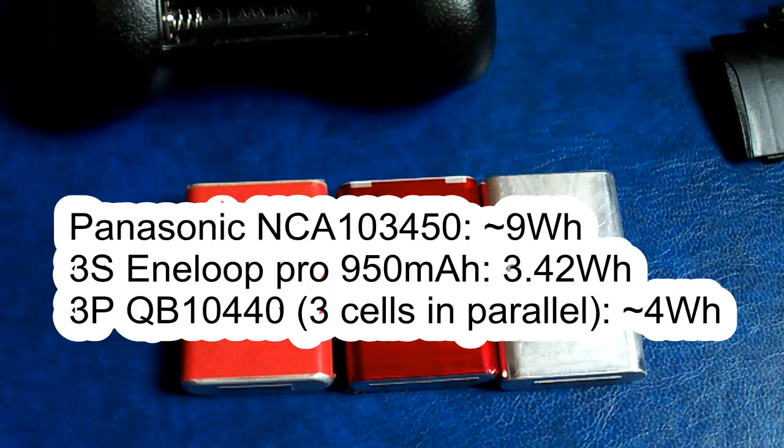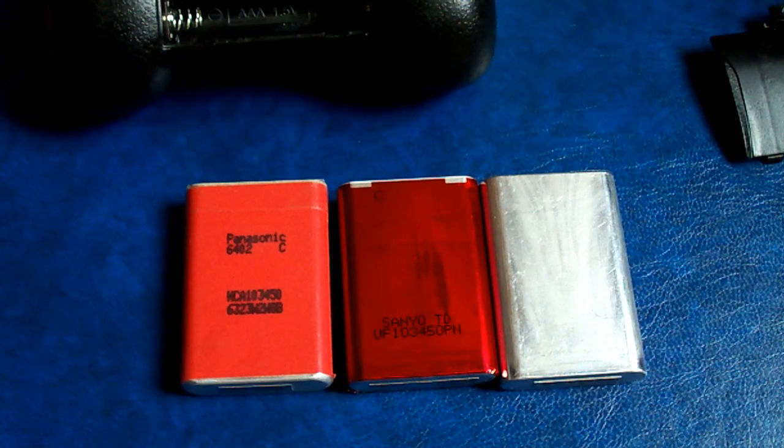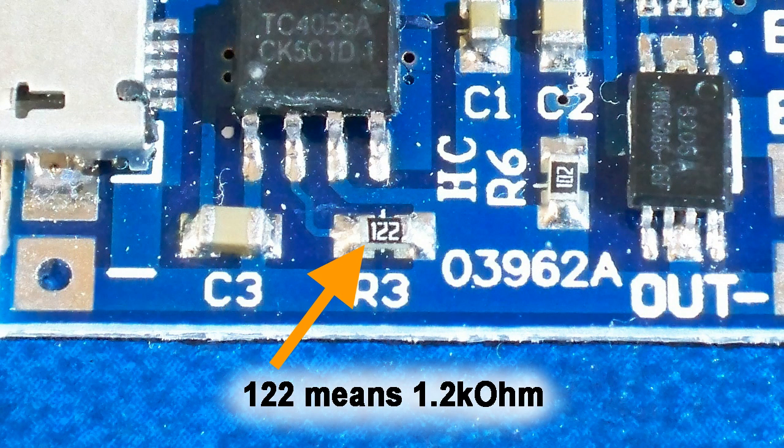But with such a high capacity you will need higher charging current. So I'd recommend to leave the 1.2 kOhm resistor and fix the board using thermoconductive glue which will not melt at 50 degrees Celsius.